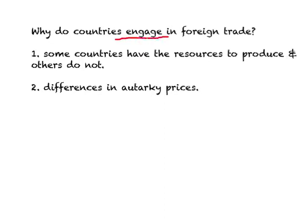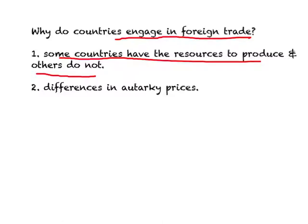Why do countries export and import? One reason is that some countries may have resources to produce something and others may not. For example, with crude oil, some countries have those resources while others do not. In such a case it's easy to explain foreign trade: if you own that resource you export it, and countries without it import it. This explanation is simple and we won't spend much time on it.